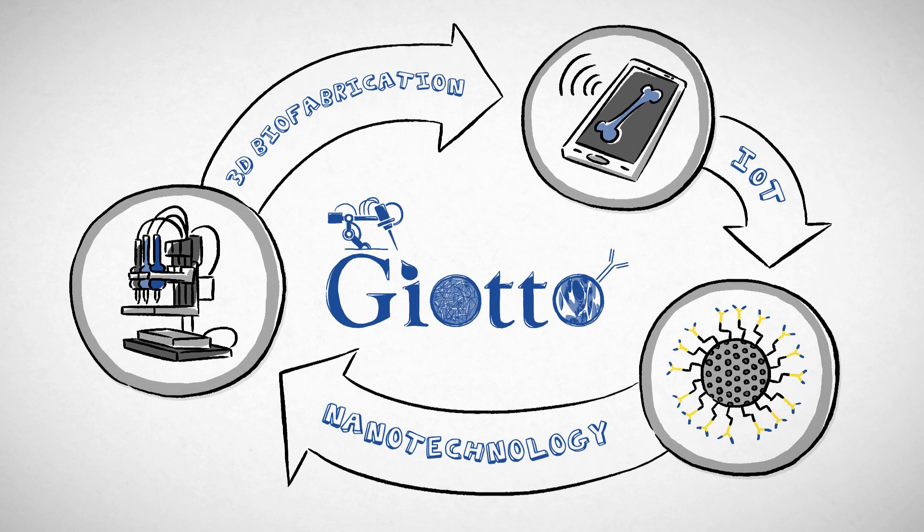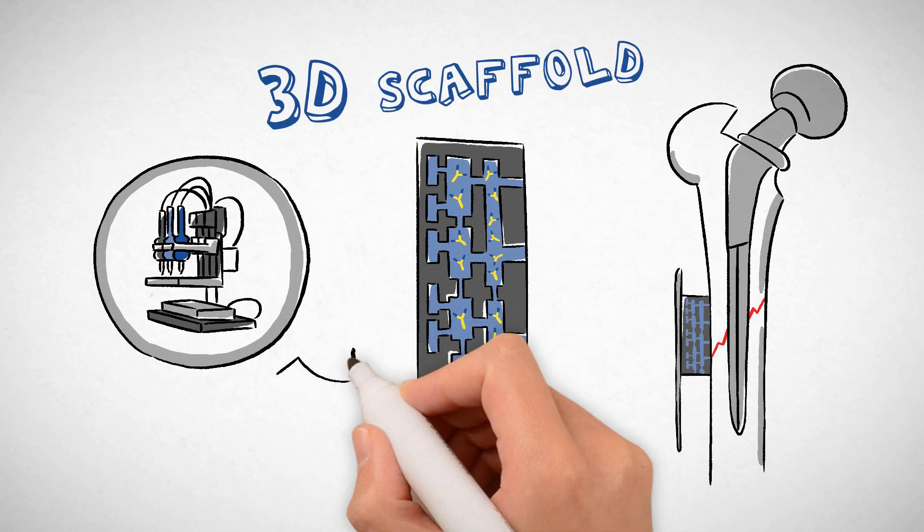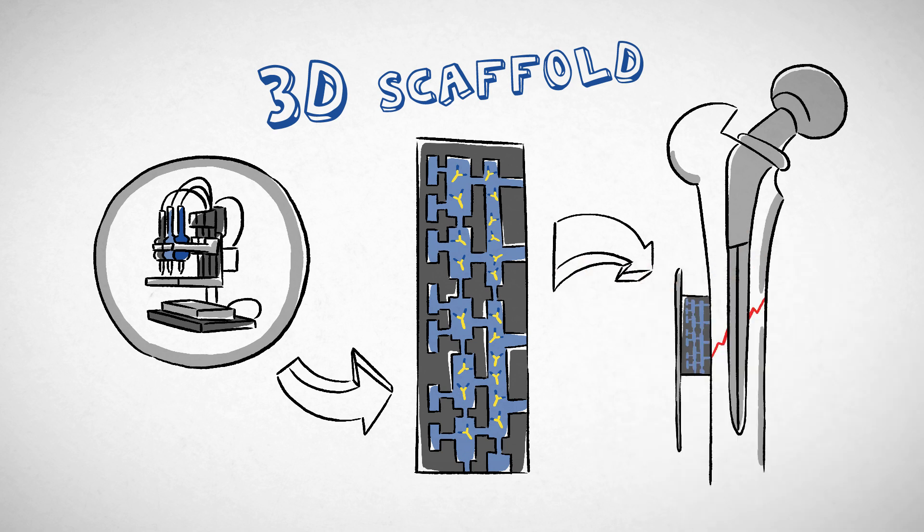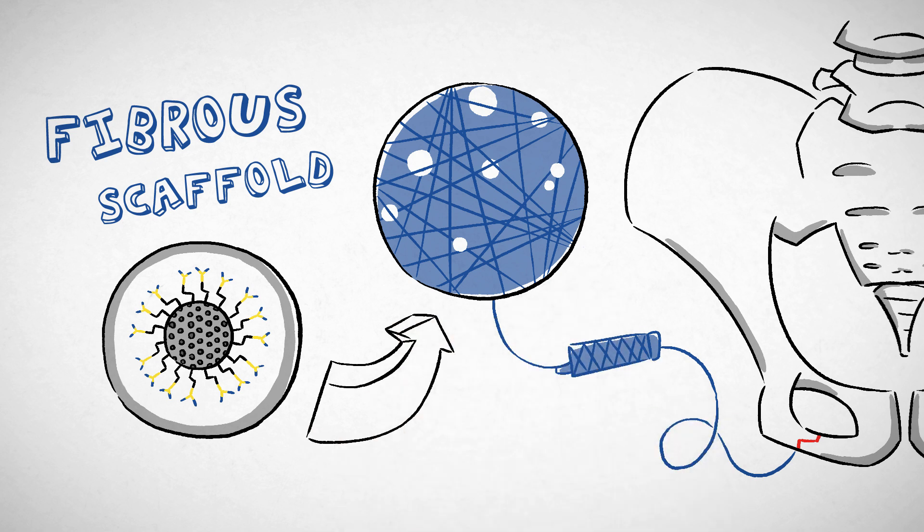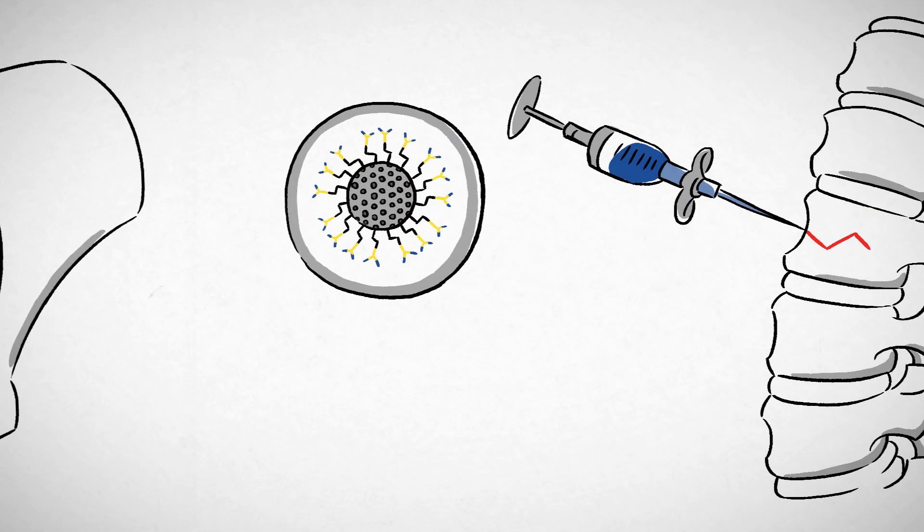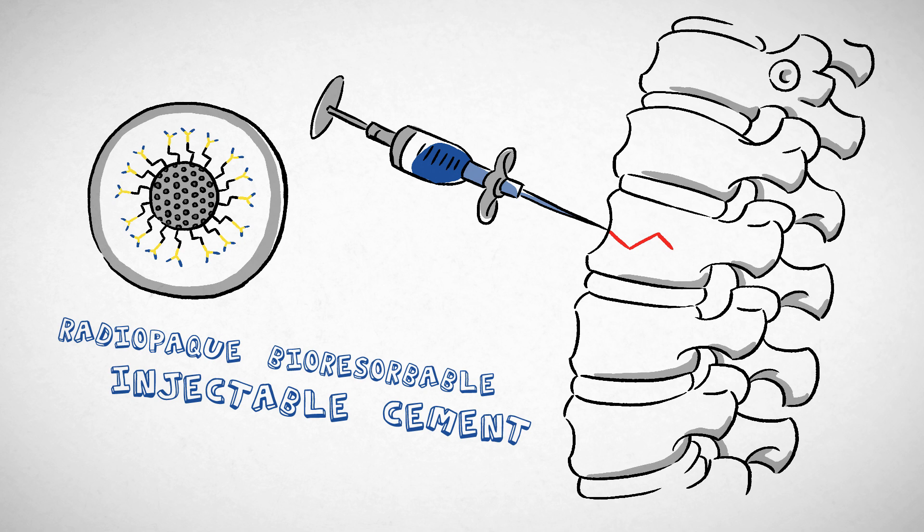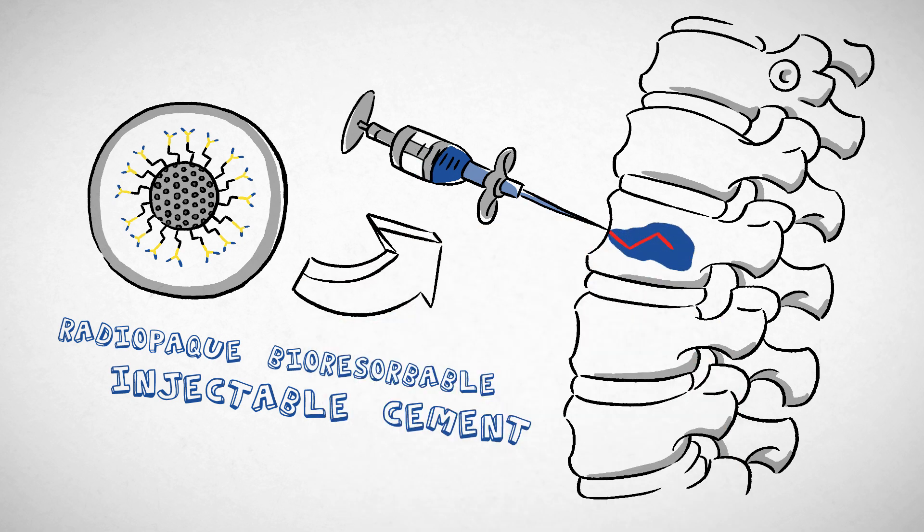Giotto has developed three innovative devices: a 3D scaffold to solve issues related to periprosthetic fractures, a fibrous scaffold for pelvic fractures, and radiopaque bioresorbable injectable cement to stabilize vertebral fractures.